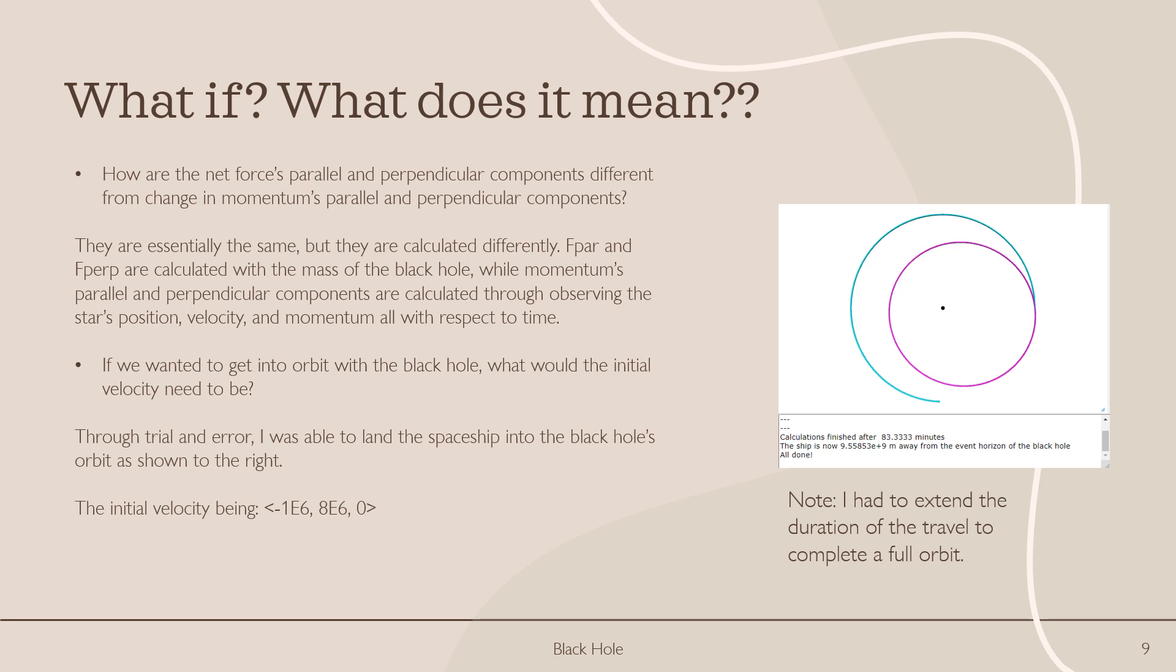So now if we wanted to get into orbit with the black hole, what would the initial velocity need to be? It took me like 30 minutes, but eventually through trial and error, I was able to find the initial velocity vector that would create this orbit on the right. That vector being negative 1 times 10 to the 6th in the x component, 8 times 10 to the 6th in the y component, and 0 in the z component.